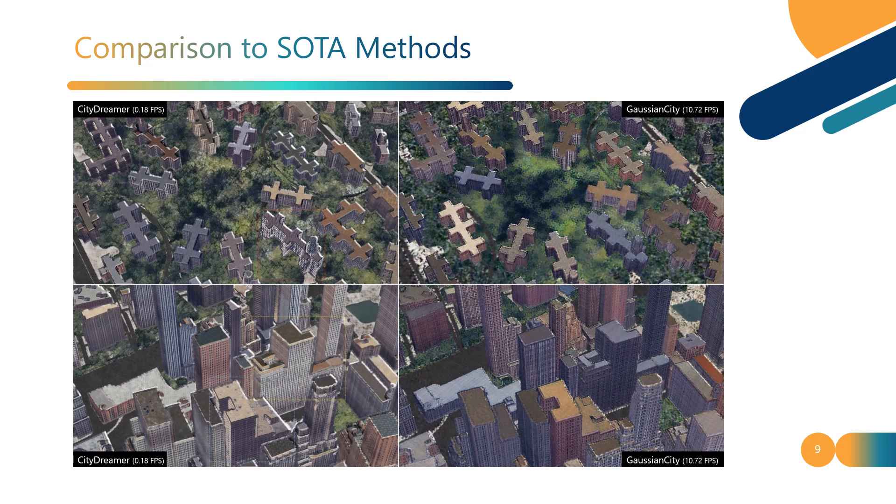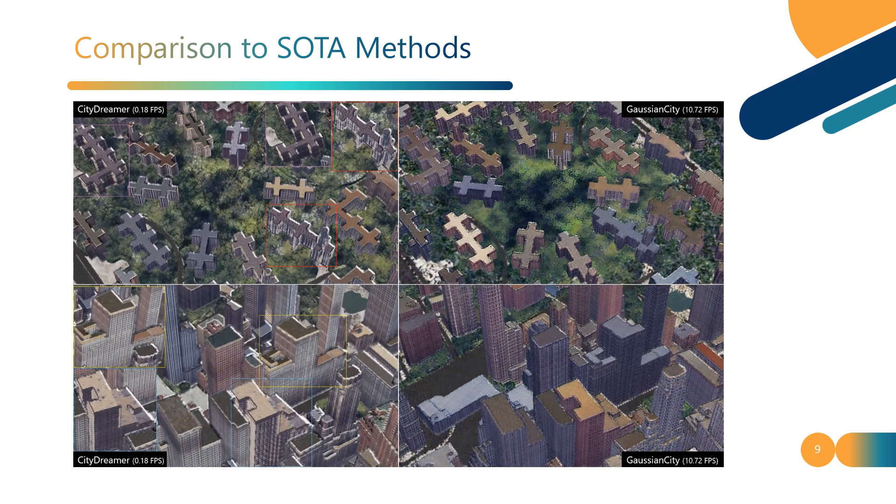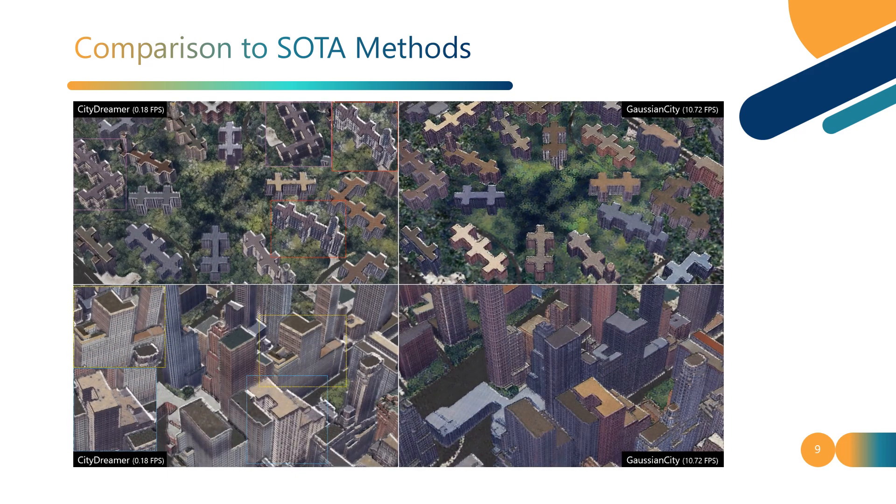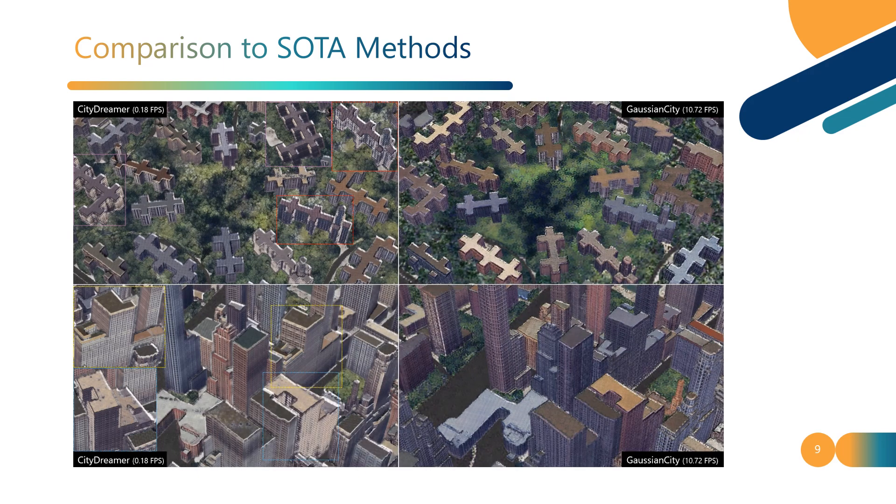Compared to City Dreamer, the proposed Gaussian City offers more consistent building facades, whereas City Dreamer's appearance changes over time.